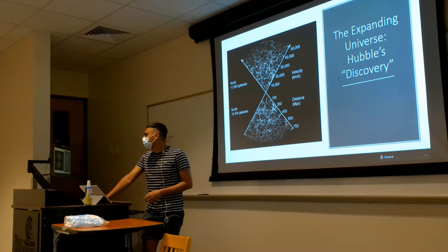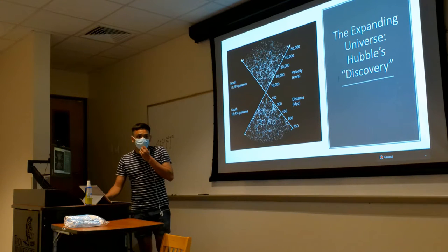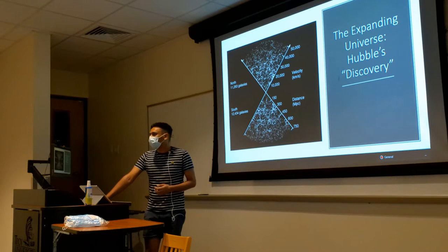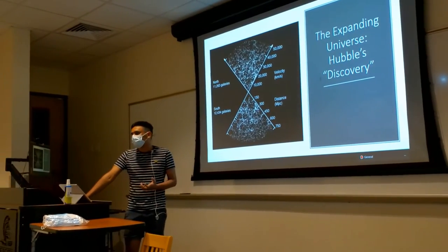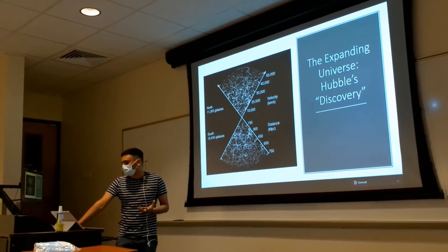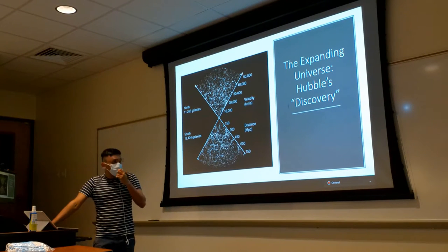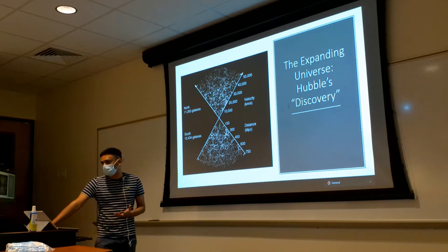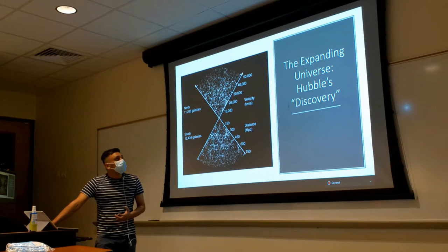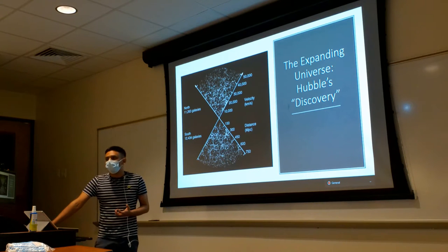We start in the early 1900s. Hubble — an astronomer in America — was looking at galaxies, which are huge collections of stars, hundreds of billions of them. Looking at no more than a few dozen galaxies, he saw a clear pattern: no matter what part of the sky he looked at, the galaxies there were moving away from us — in all directions. He also noticed that the farther the galaxies were, the faster they were moving.